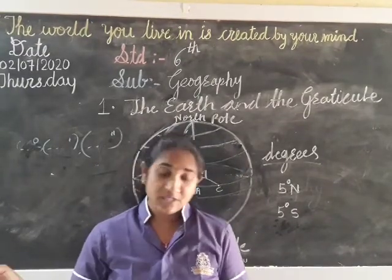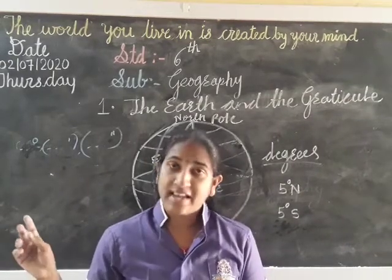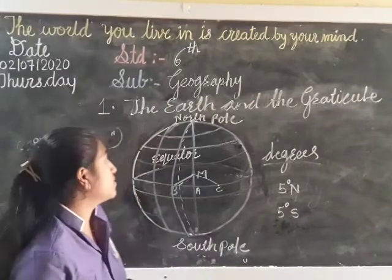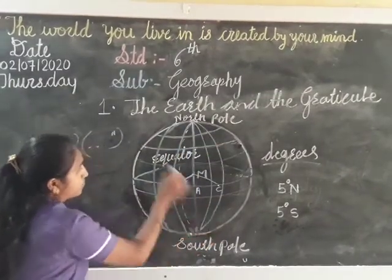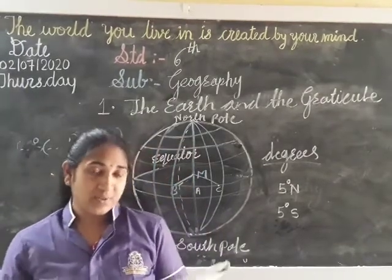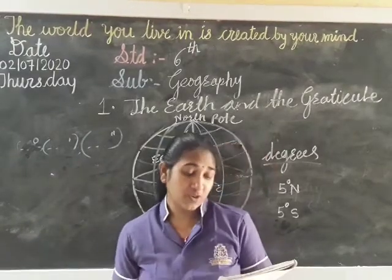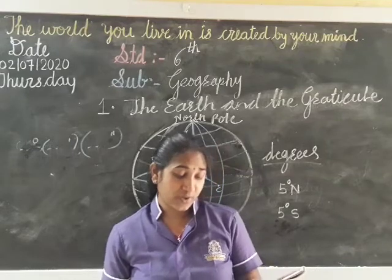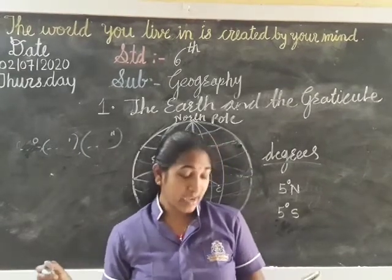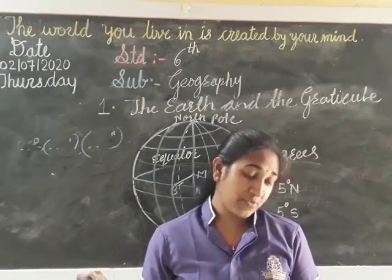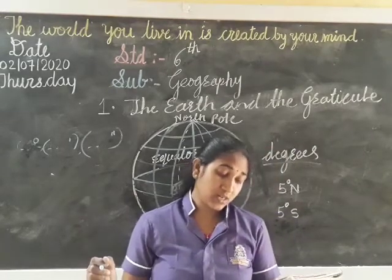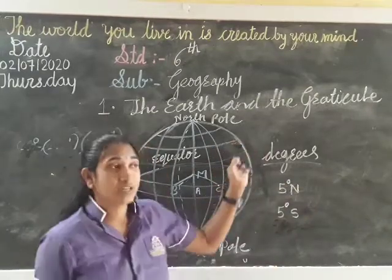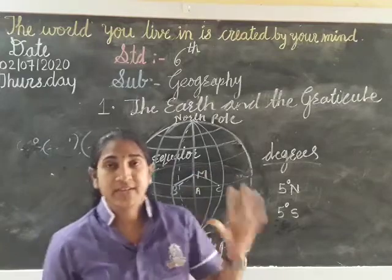Next is about the graticule. The parallels and meridians of the globe form a net that is called the graticule. The parallel lines and meridians together form this net, which is called the graticule. This graticule determines the location of any place. Thus, we use latitude and longitude for determining location on the earth.